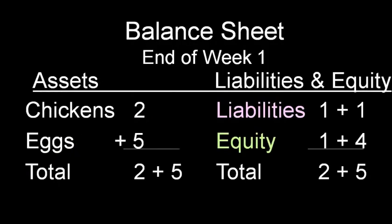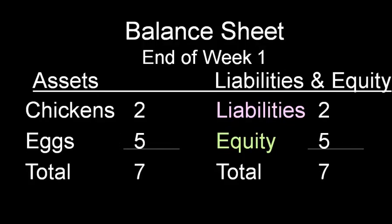This is how the income statement feeds into the balance sheet. The balance sheet is a rolling, cumulative total, and the week's income statement is added to it. On the left side, we're showing the five eggs being added to the balance sheet, increasing the total by five. On the right side, one of the five goes to the lender, and four is the profit — the company's to keep. Those sum to five as well. When we add it all up, we're left with two chickens and five eggs for a total of seven. Of those seven, the lender has a claim of two and five is the company's to keep, for a total of seven.